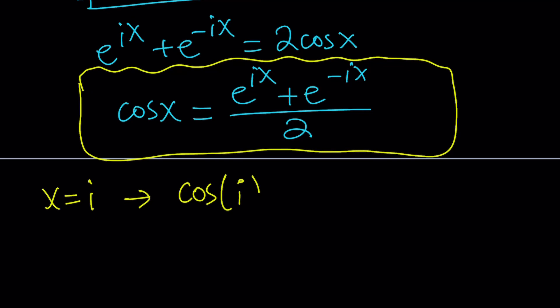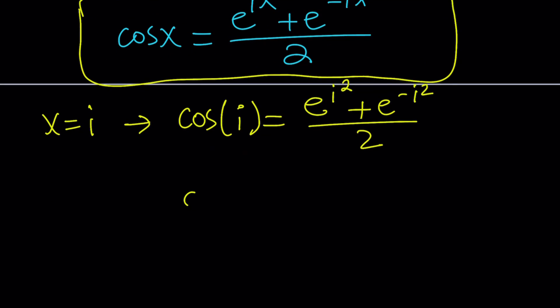So we get the following if we do that. Cosine of i equals e to the power i times i, which is i squared. Plus e to the power negative i times i, which is negative i squared. Divided by 2. Now, e to the power i squared. i squared is equal to negative 1. So this is gonna be e to the power of negative 1. e to the power of negative i squared is gonna be e to the power 1, which is e, divided by 2. So that should be the answer, right? But come on. We can simplify this a little bit. And we're also gonna look at something else.